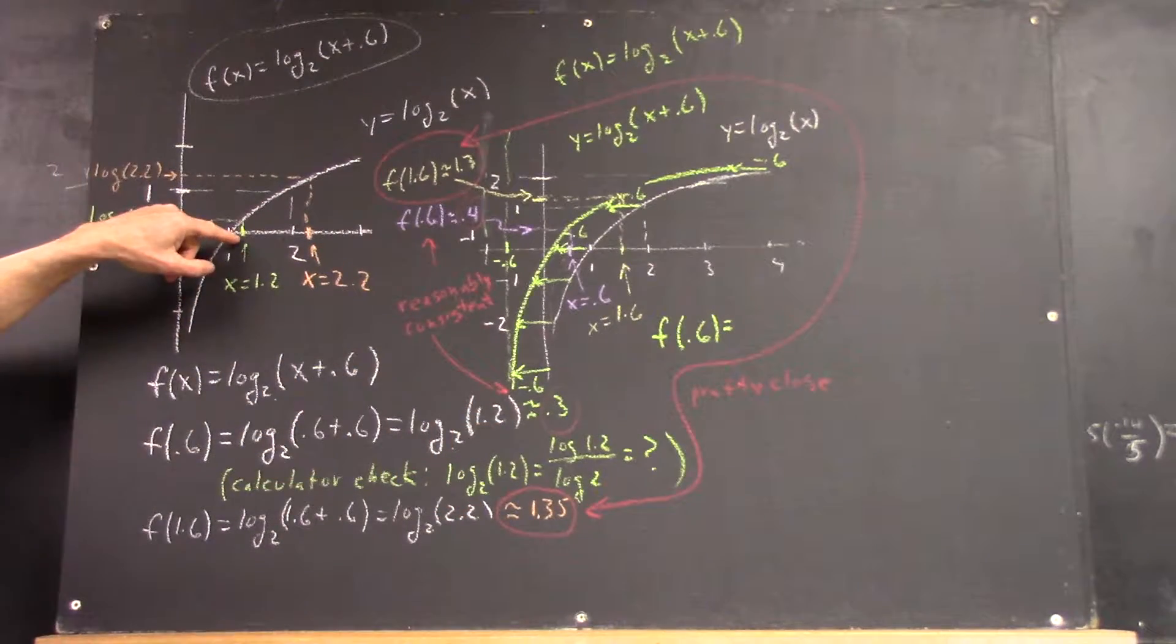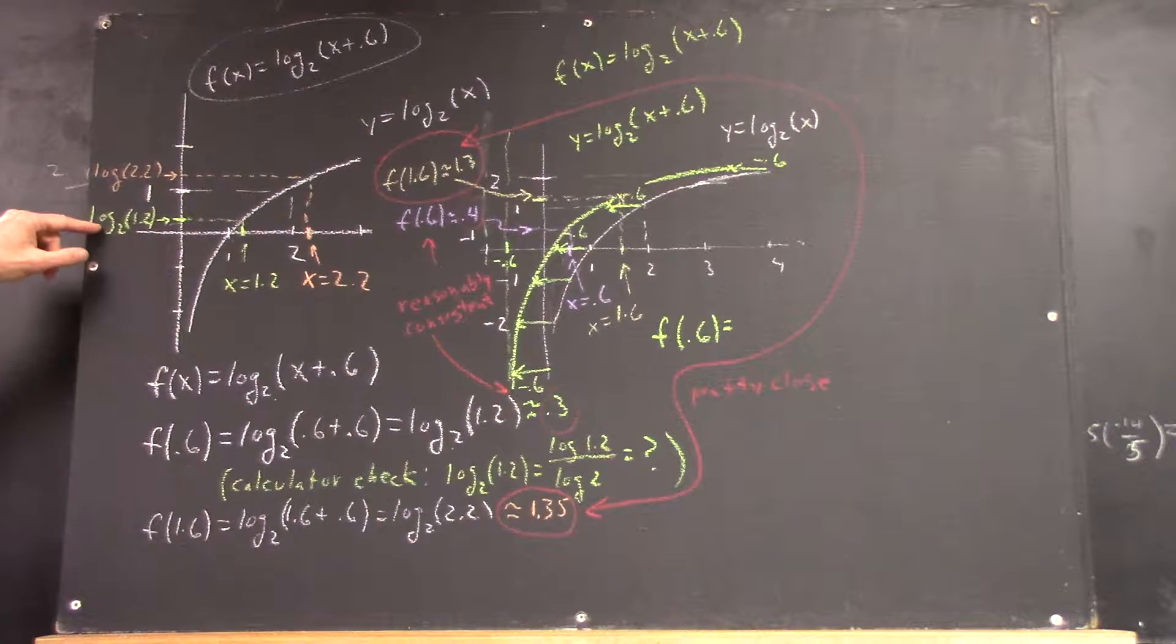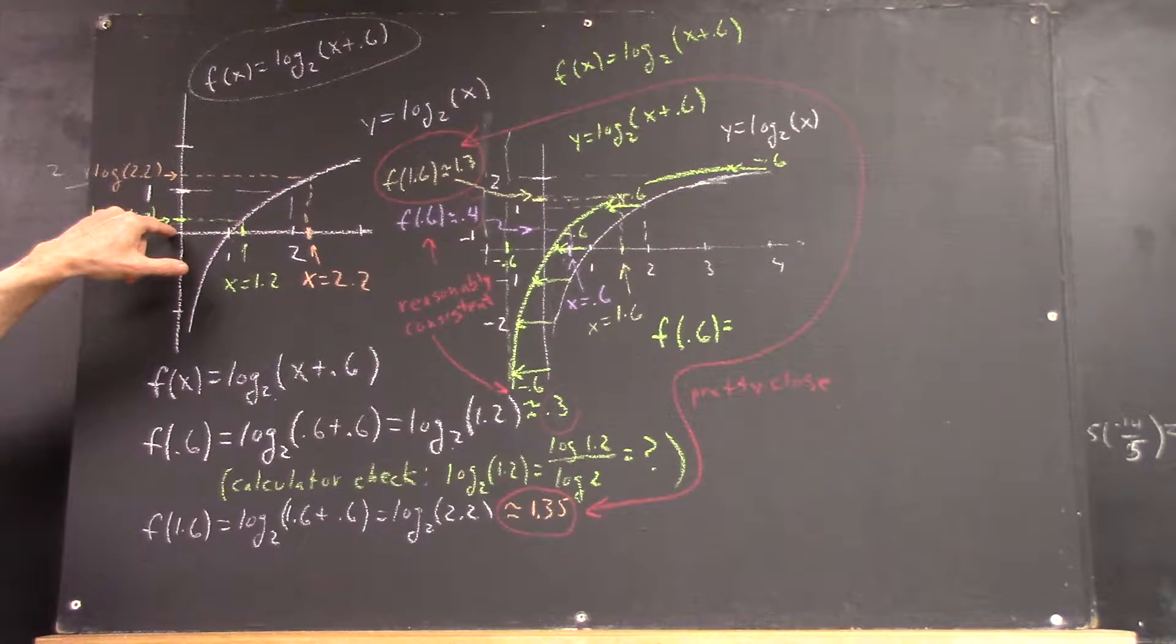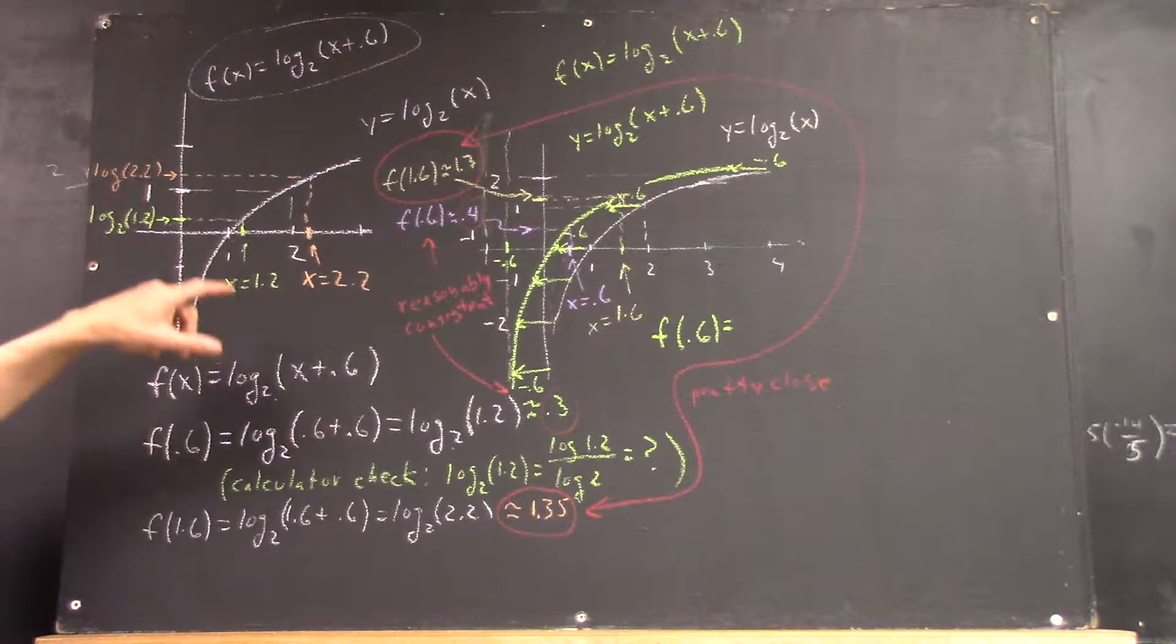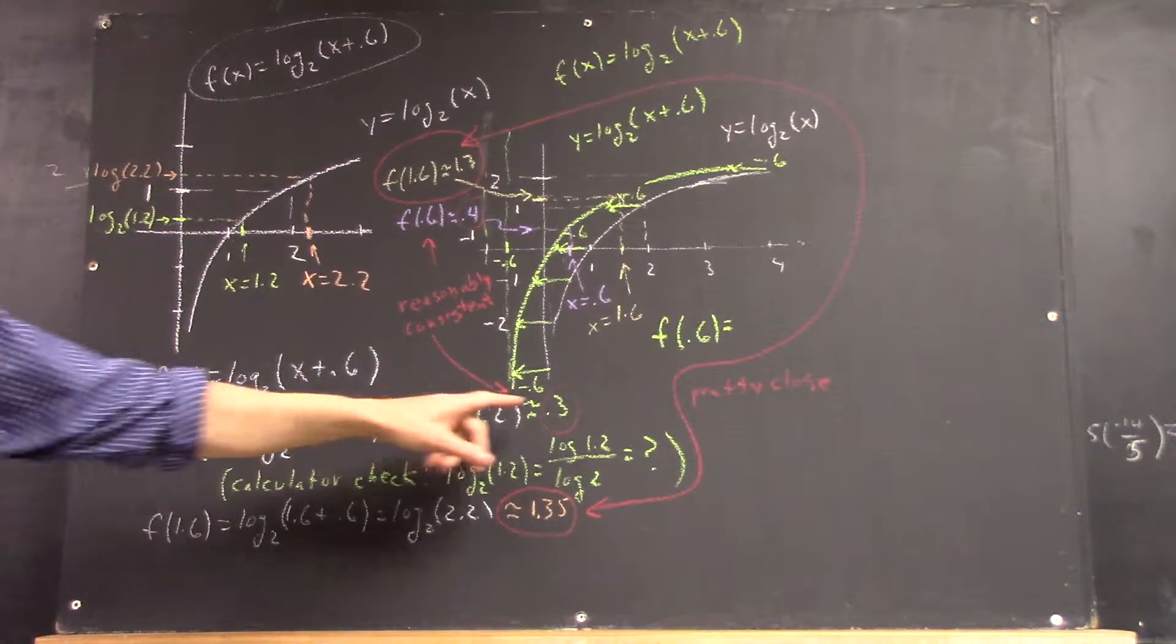You come over to the graph, here's x equals 1.2. You project up to the graph and over, and here's log base 2 of 1.2, which we estimated to be 0.3 based on this graph. So, there's our estimate.